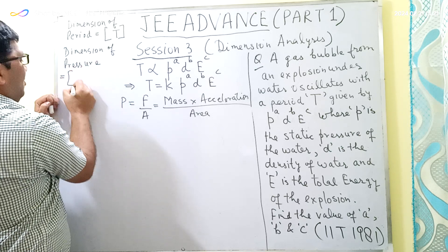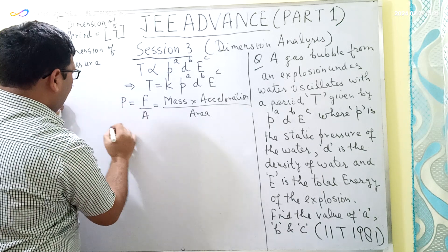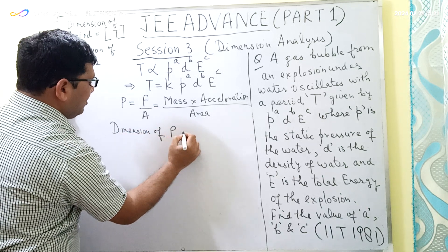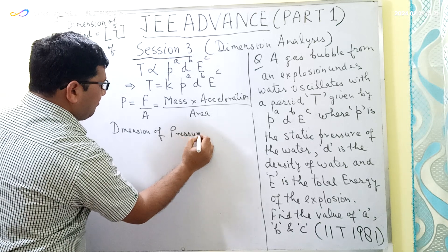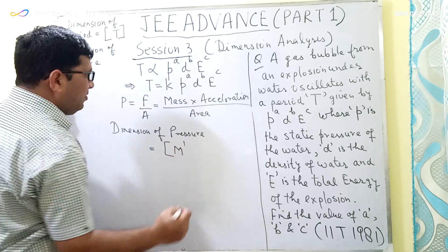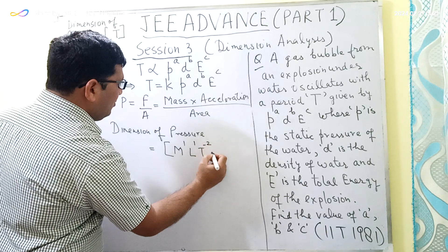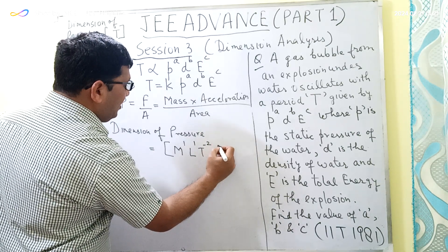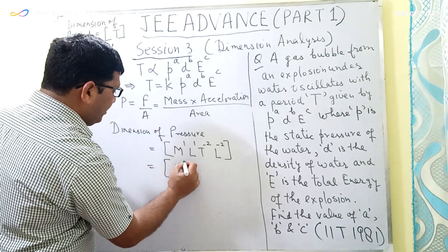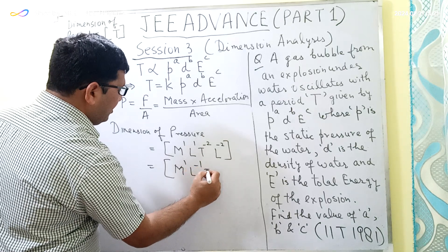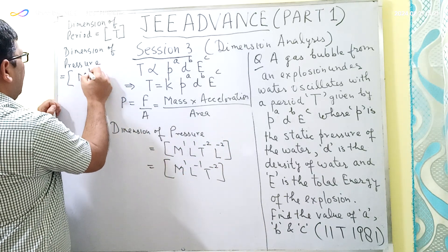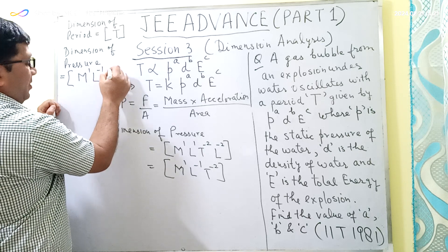So the dimension of pressure will be M · L · T⁻² divided by L², which gives M¹ · L⁻¹ · T⁻². Therefore the dimension of static pressure is M¹L⁻¹T⁻².